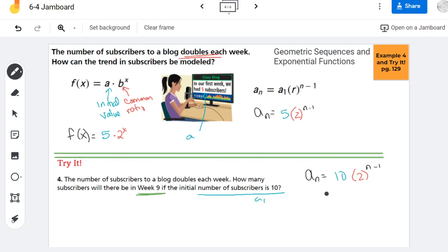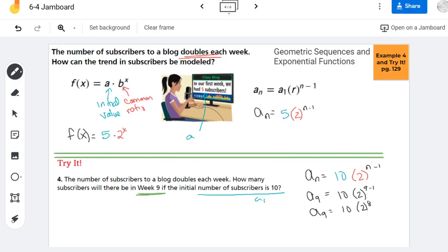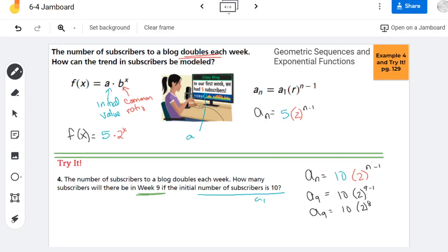So if I'm finding it on week 9, what I'm doing is I'm finding a₉. So where the n is in my formula, I'm replacing that with a 9. Now, 9 minus 1 up here is 8. So really what I'm doing is 10·2⁸. So I'm going to go to Desmos to help me to do this formula. Now, if you're using a different calculator other than Desmos, you need to make sure to put grouping symbols around the 2⁸. So that would be 2,560.